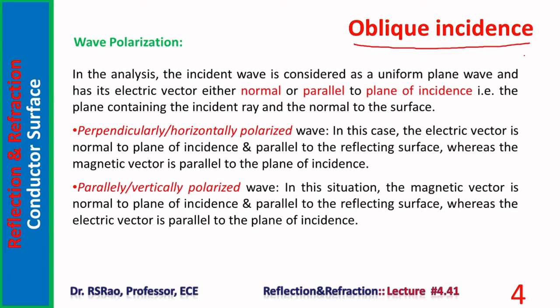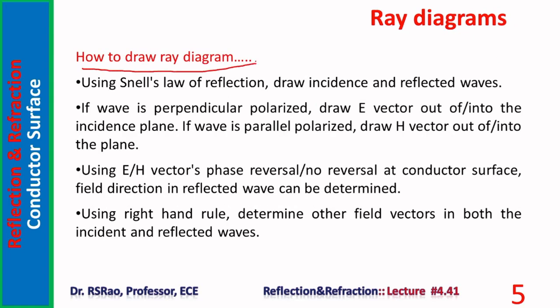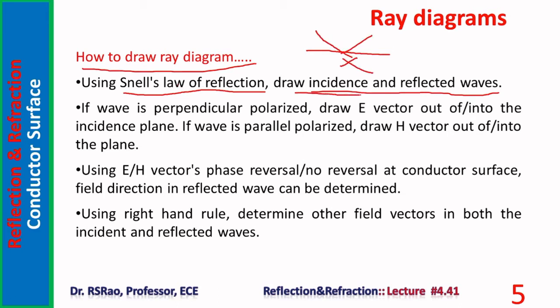To sketch ray diagrams, we apply Snell's law of reflection. Since incidence is on a perfect conductor surface, there is no transmitted wave — no refracted wave — because no field exists inside the conductor. Analysis therefore involves only two waves: the incident wave and the reflected wave. Using Snell's law, angle of reflection equals angle of incidence, the reflected wave can be sketched. For a perpendicularly polarized wave, the E vector is drawn out of or into the plane of incidence accordingly.